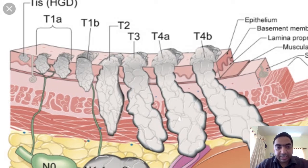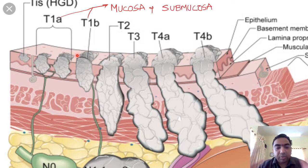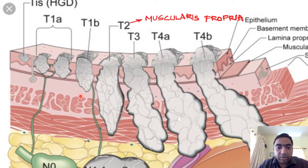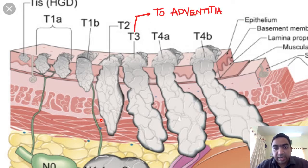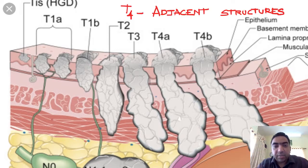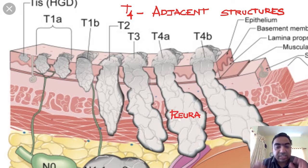In T staging: T1A lesions are completely in the mucosa; T1B lesions cross into the submucosa. T2 lesions invade the muscularis propria — the circular and longitudinal muscle fibers. T3 lesions reach the adventitia but do not infiltrate adjacent structures. T4 lesions penetrate or infiltrate adventitial structures — T4A if the pleura is infiltrated and T4B if the aorta is infiltrated.